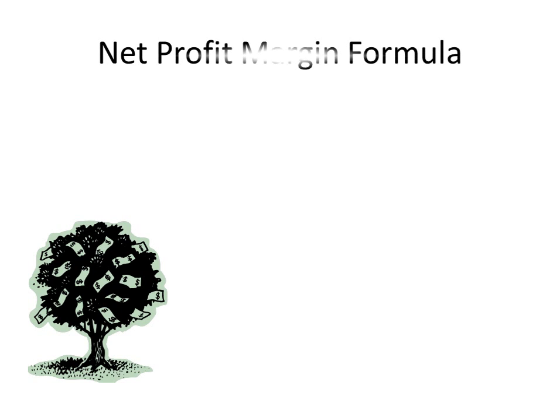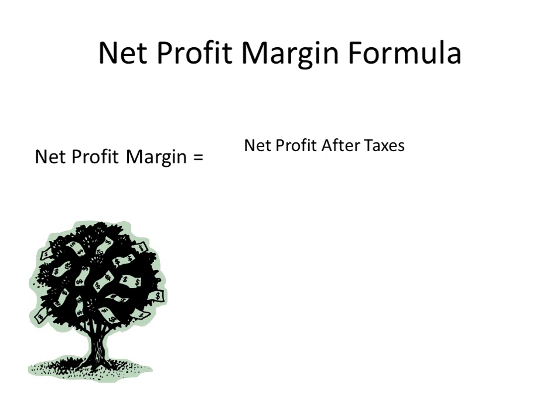We calculate the net profit margin ratio with a simple formula — it involves basic division. The net profit margin equals the net profit after taxes divided by the total revenues.